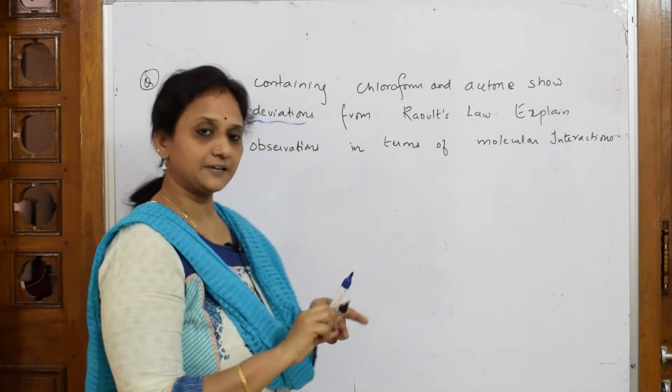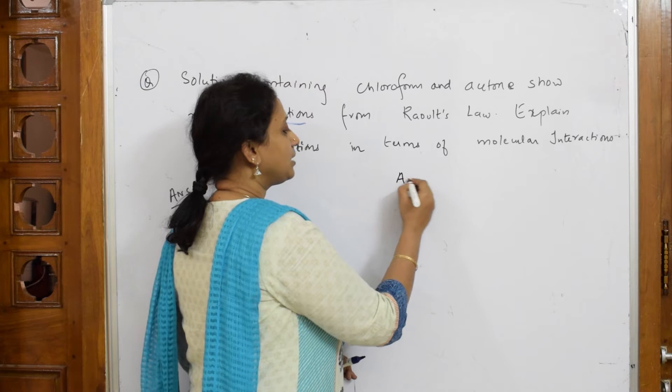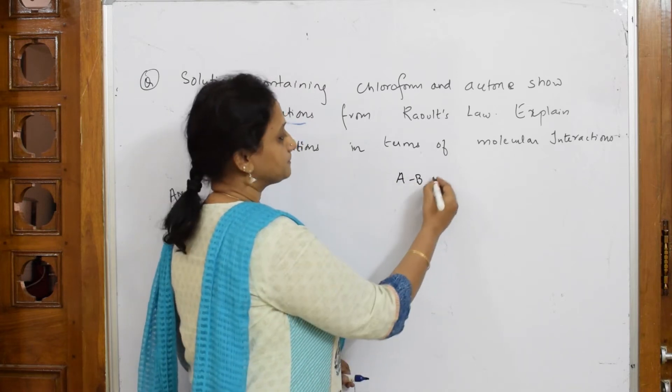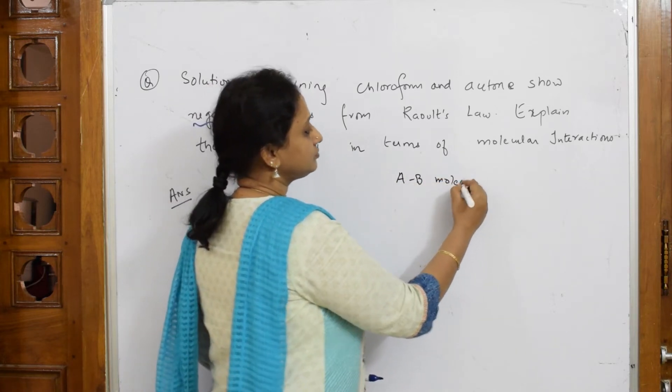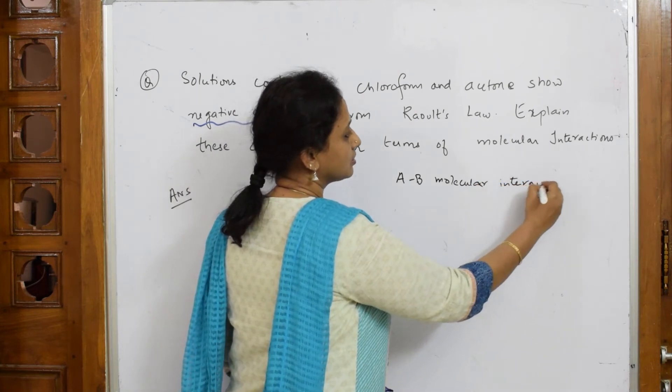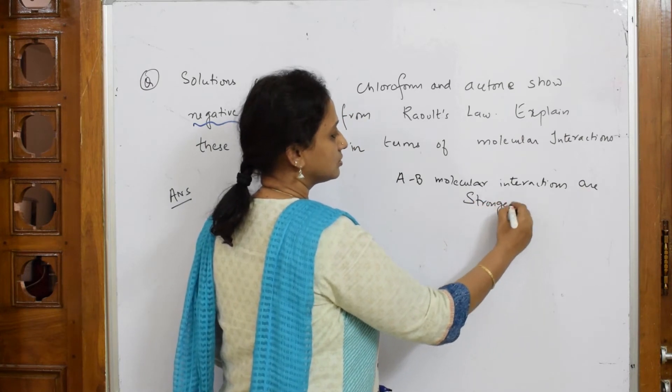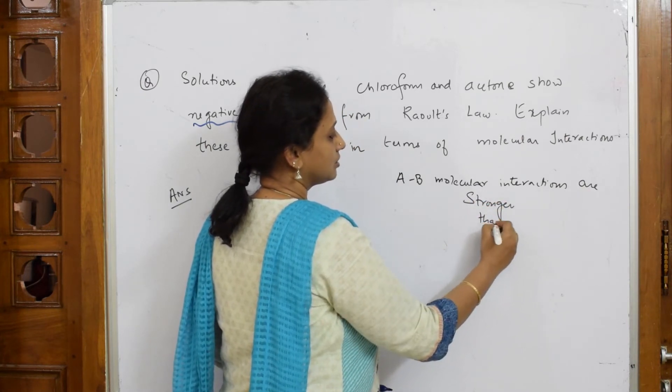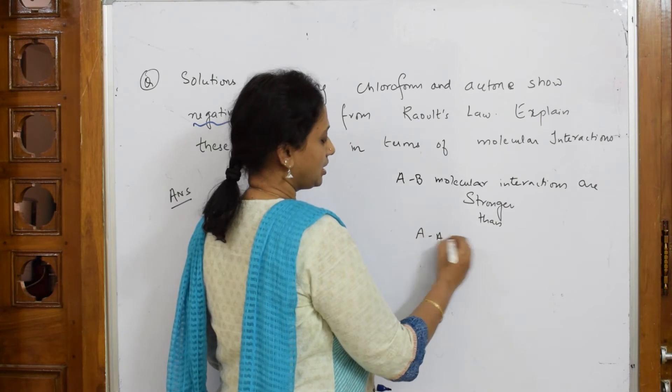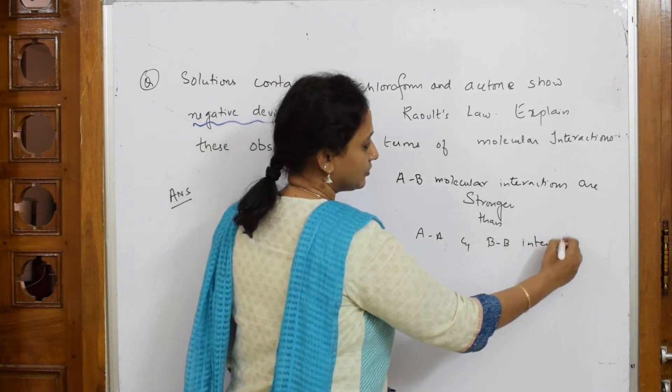When they give me negative deviation, immediately I have to focus on that concept. What is the concept? A-B interactions or molecular interactions are stronger than A-A and B-B interactions. This is the concept, isn't it?